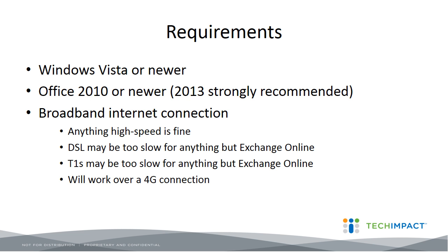Scott asks: how fast of an Internet speed do you really need for Office 365? It depends on the size of your organization. If you are under 100 employees, a standard Comcast or FiOS — any kind of cable or fiber optic connection — is going to be fine. But it depends on your specific scenario and what you are looking to do. You really need to assess which programs you might be most interested in using; if there are high-bandwidth ones like SharePoint or Lync, then broadband Internet is really your best bet.